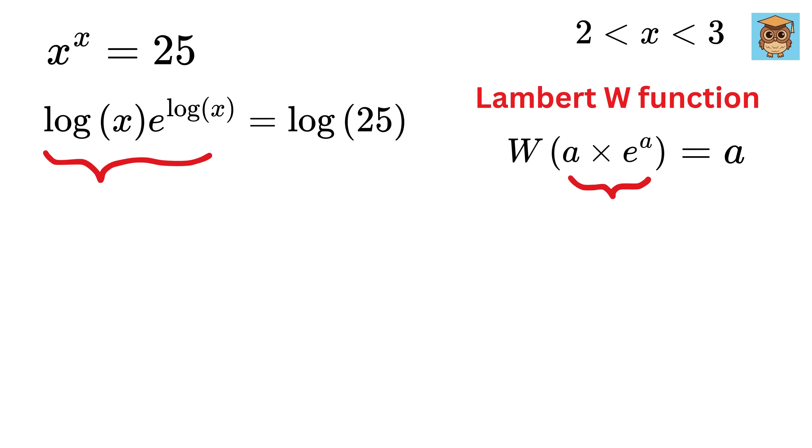Now if you compare this expression with this one, we have the value of a as the natural log of x. So we can easily apply the Lambert W function on both sides of this expression. This gives W of log x times e raised to the natural log of x equals W of natural log of 25.